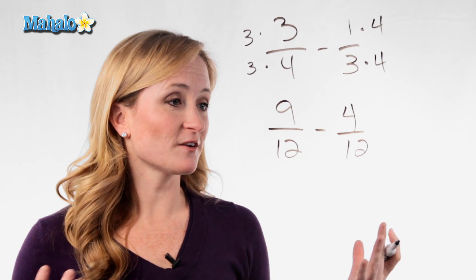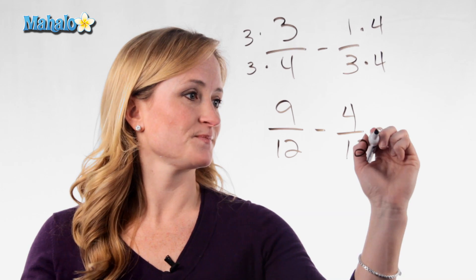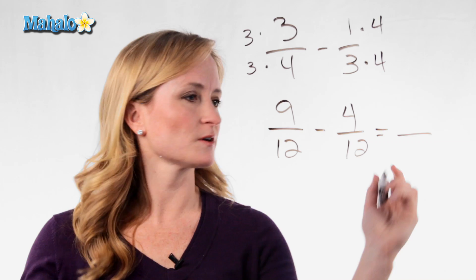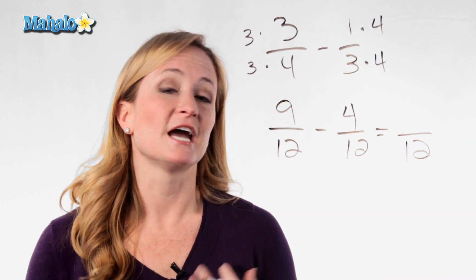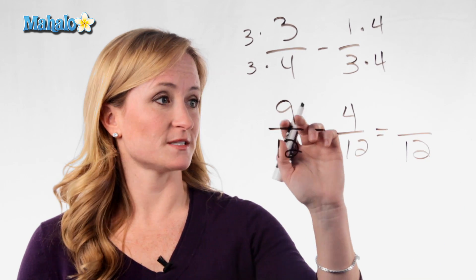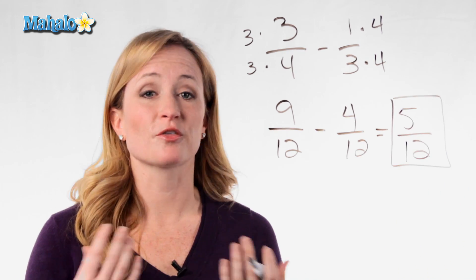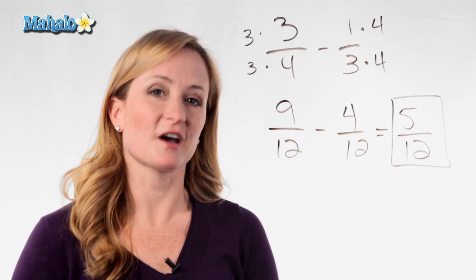So we now have a new set of fractions that we can actually subtract. Remember, you don't subtract the denominator because that would be 12 minus 12 is 0. That wouldn't work. So you leave the 12 and you just subtract the top numbers. So it's 9 minus 4 is 5. So your answer to 3 fourths minus 1 third is 5 over 12.